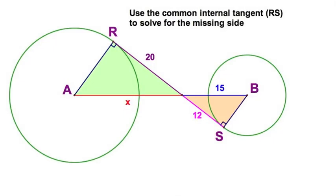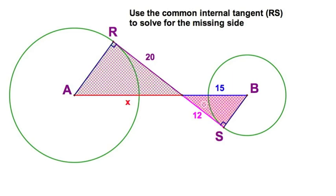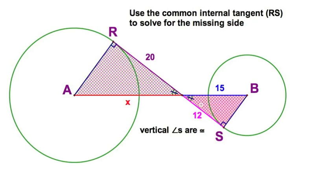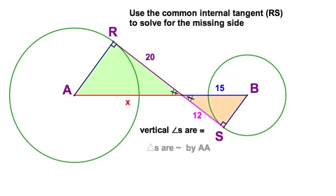Here's an example where we're going to make use of a common internal tangent, and that internal tangent is RS between the two circles AB. Now I've already got it prettied up for you. We can see the two triangles, and we know we've got vertical angles right there. Vertical angles are congruent. I know I've got perpendicular or right angles at the point of tangency, so I know that these two triangles are going to be similar by angle angle.